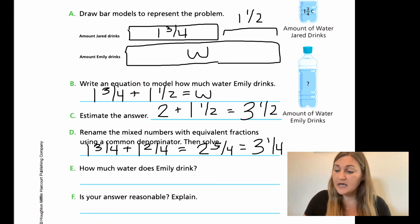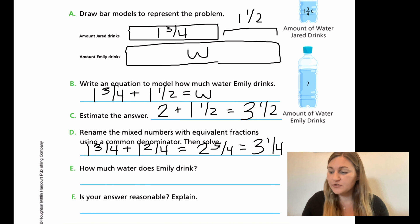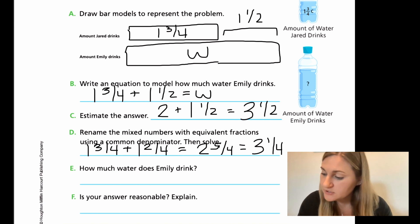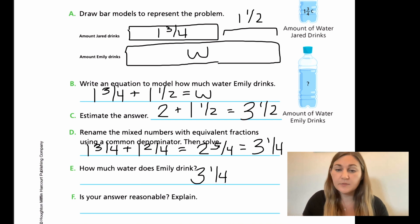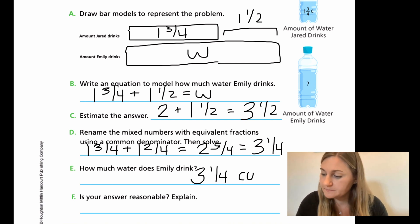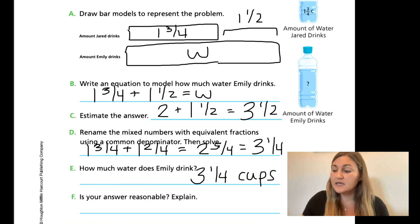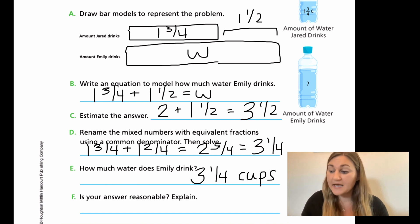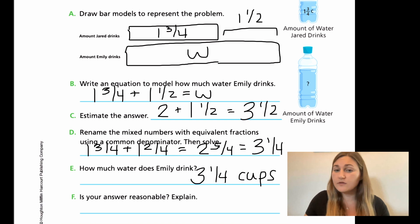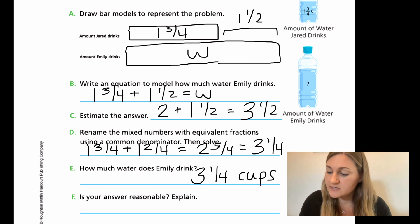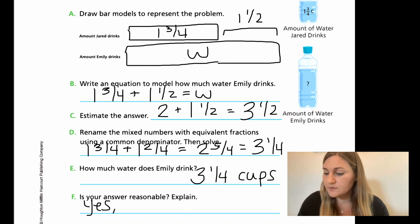For E, how much water does Emily drink? We found that she drinks three and one fourth cups. For F, is this answer reasonable? My answer was three and one fourth. Going back to C, my estimated answer was three and a half. Are those very close? Yes. So is my answer reasonable? Yes, because it's close to the estimate.